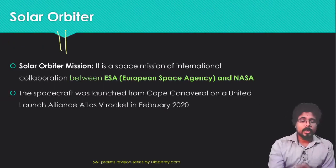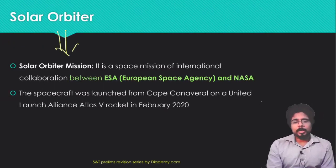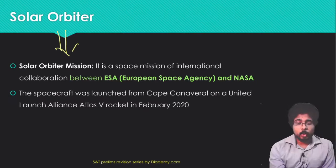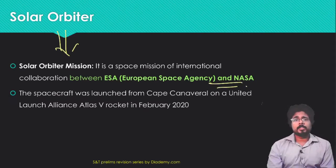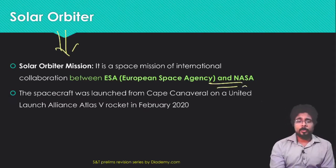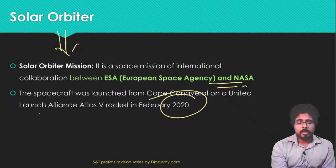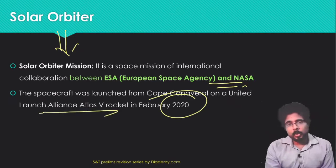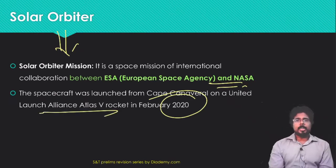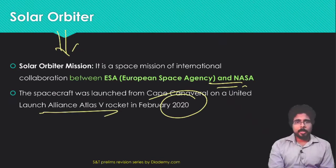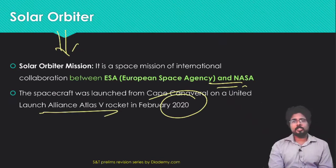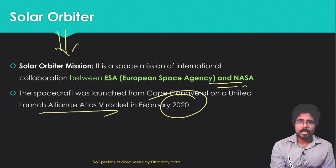The Solar Orbiter is a joint mission between the European Space Agency and NASA. It was launched in February 2020 using the Atlas V rocket and was launched from the United States.